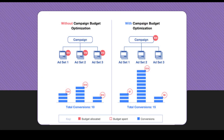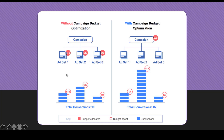Let's get started with what Facebook campaign budget optimization is. This is a graphic that Facebook put together quite a while ago, and even to this date it's the easiest way to illustrate what CBO is. On the left, we have campaigns without budget optimization. There are three ad sets within this campaign, each with a $10 a day budget.